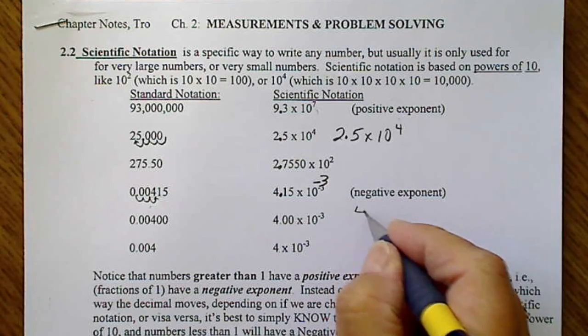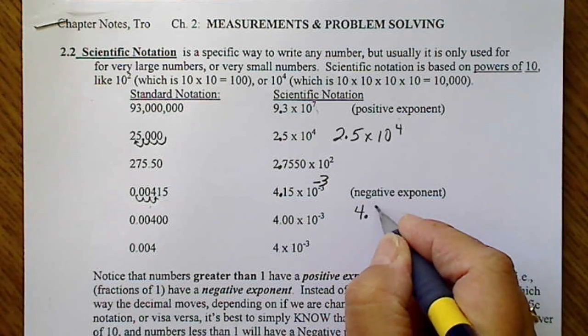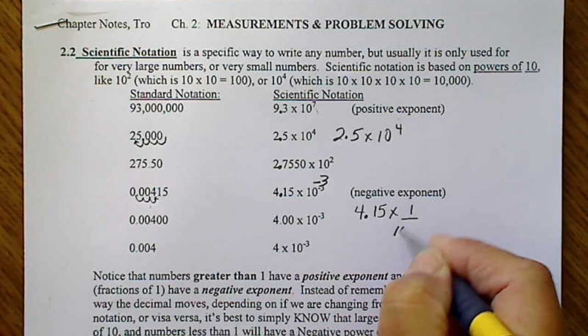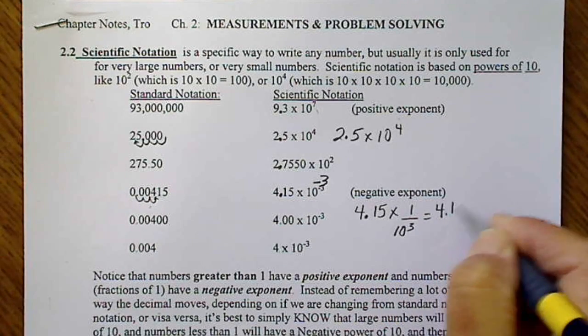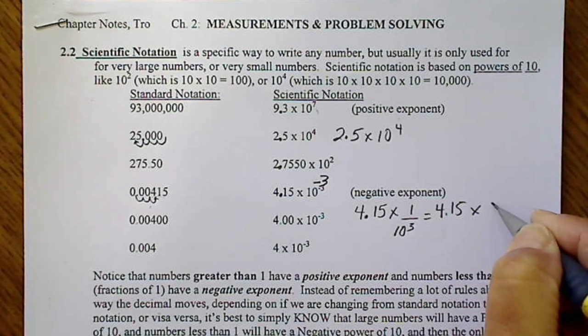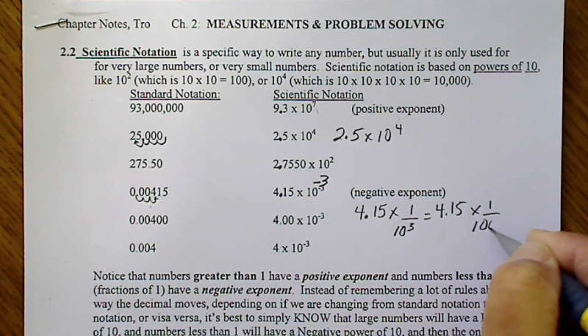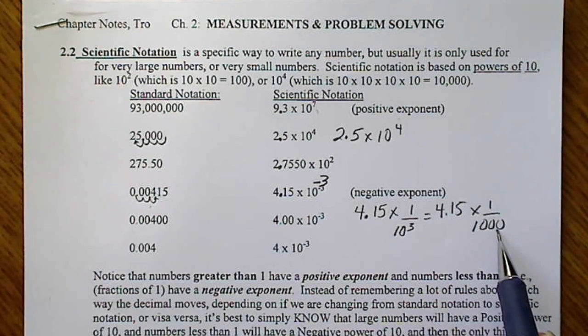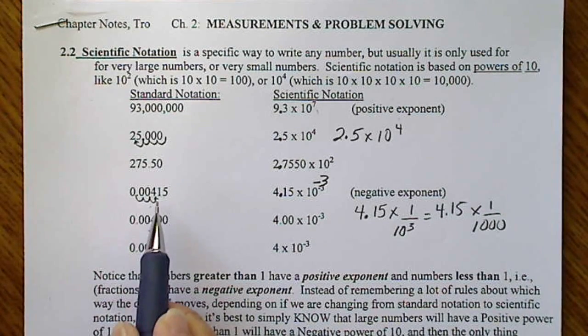We don't really need to know this, but if we wrote this as 4.15 times 1 over 10 to the 3rd, that's 4.15 times 1 over 1,000, or that turns into 4.15 divided by 1,000, which would get us right back to this number.